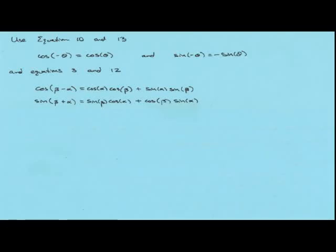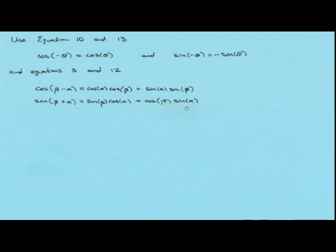In this video, we'll derive the remaining sum and difference trig identities. What we'll need is the odd and even cosine formulas: cosine of negative theta is cosine of theta, and sine of negative theta is negative the sine of theta. We'll also use the sum and difference formulas already derived: cosine of beta minus alpha equals cosine of alpha cosine of beta plus sine of alpha sine of beta, and sine of beta plus alpha equals sine of beta cosine of alpha plus cosine of beta sine of alpha.